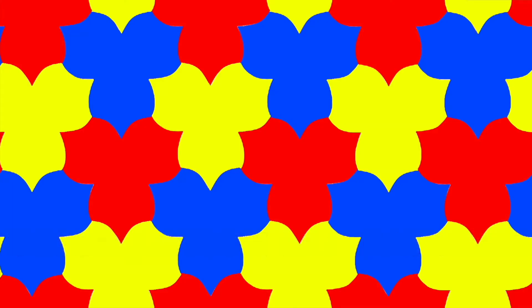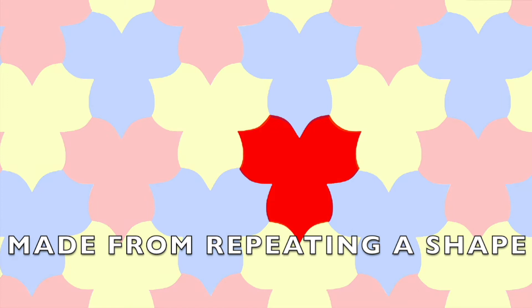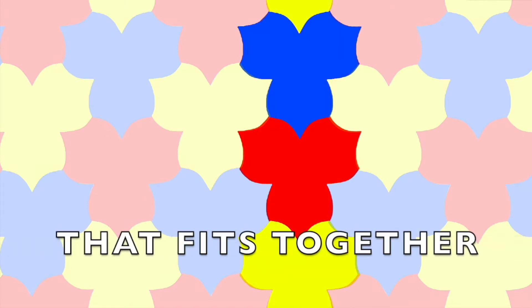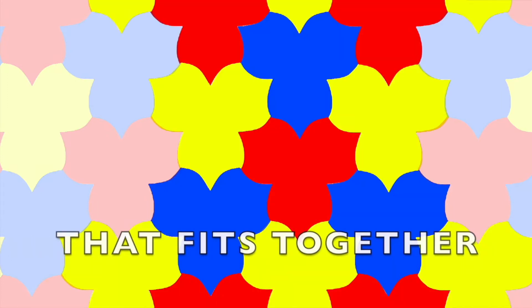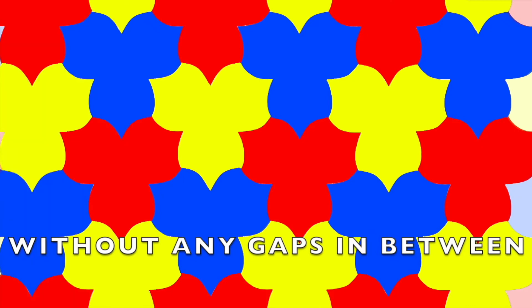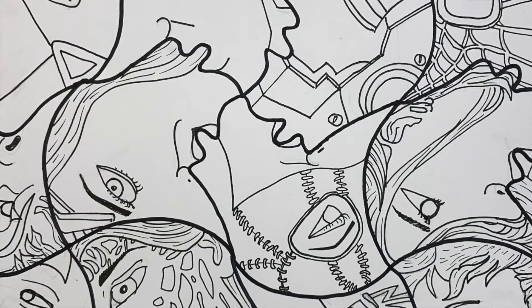Tessellation is a pattern which is made from repeating a shape that fits together without any gaps or spaces between them. There are three types of tessellation: translation, rotation, and reflection or flip tessellation.